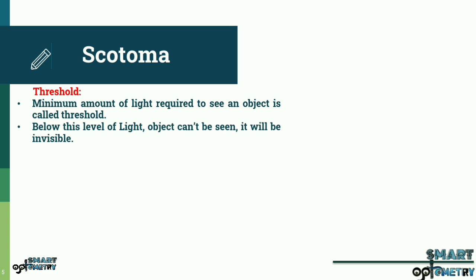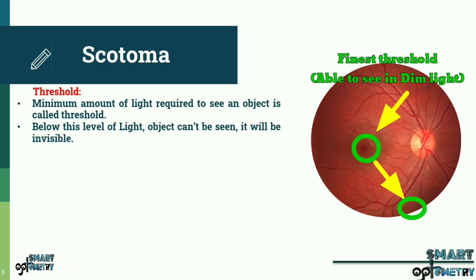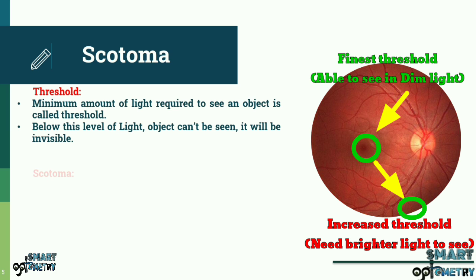In our retina, the fovea has the finest threshold — even with dim light, an object can be seen. When we move from the fovea to the periphery, the threshold increases and we need brighter light to see an object.